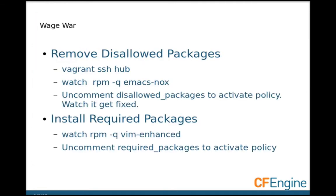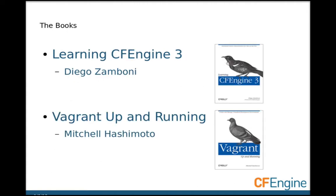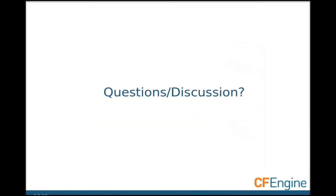So that's what we did — we played around with adding and removing packages to show an example of using a Vagrant environment to develop CFEngine policy. I also wanted to mention some books: Diego Zamboni's Learning CFEngine 3 — highly recommended. I'm not quite finished reading Vagrant Up and Running, but it's pretty good. You don't have to know anything about Vagrant to get going, and in the later chapters there's information about building plug-ins, so it really does run the gamut.